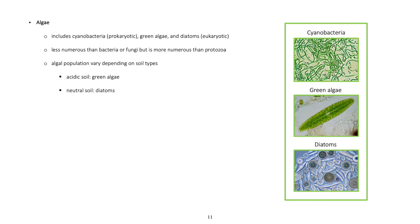Algae. Includes cyanobacteria (prokaryotic), green algae, and diatoms (eukaryotic). Less numerous than bacteria or fungi but more numerous than protozoa. Algal population vary depending on soil types. Acidic soil: green algae. Neutral soil: diatoms.